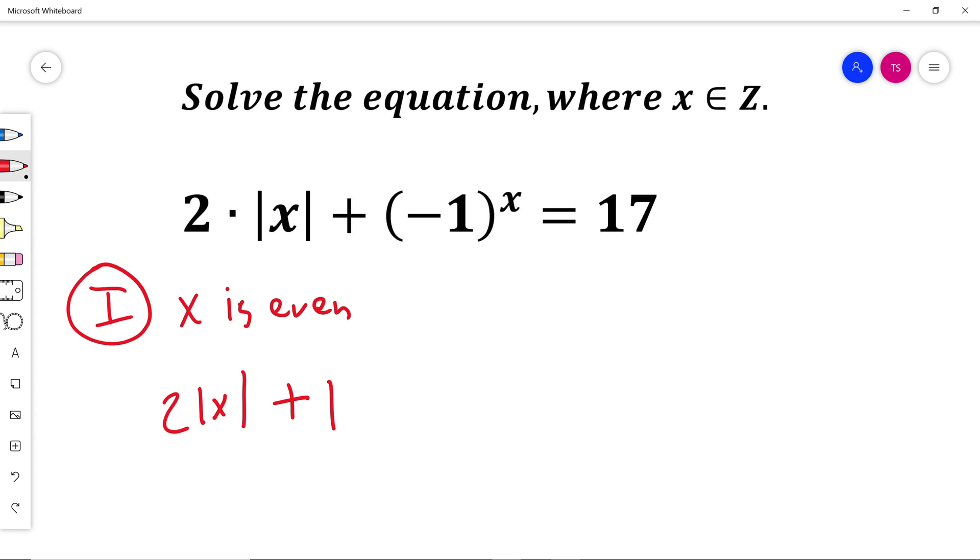Minus 1 squared is just 1, or minus 1 to the power of 4 is just plus 1. So this equation will be 2 times absolute value of x plus 1 is equal to 17.